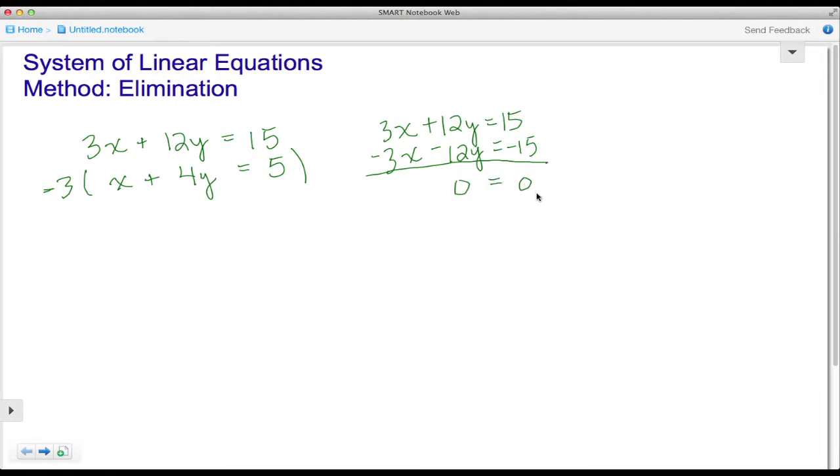With a linear system such as this, where the left-hand side equals the right-hand side, this is known as a dependent linear system, meaning that these two equations are the same line.